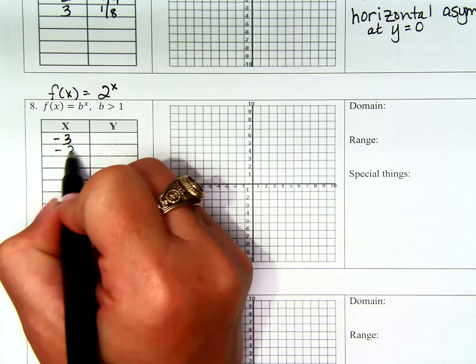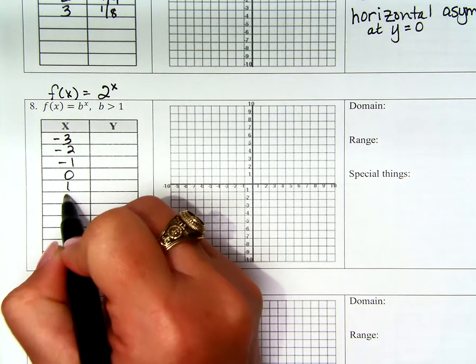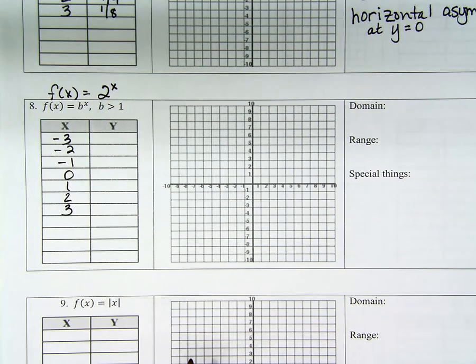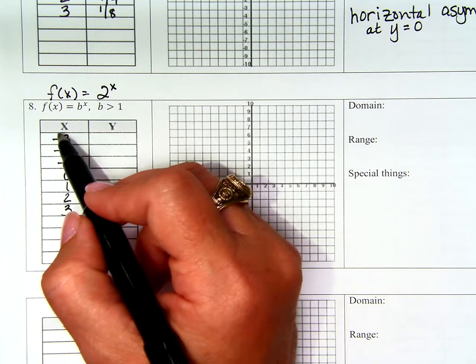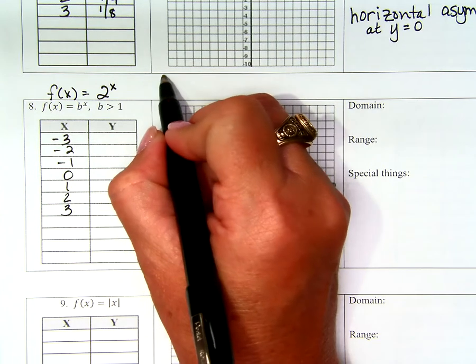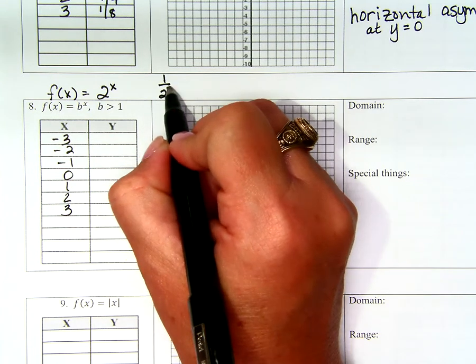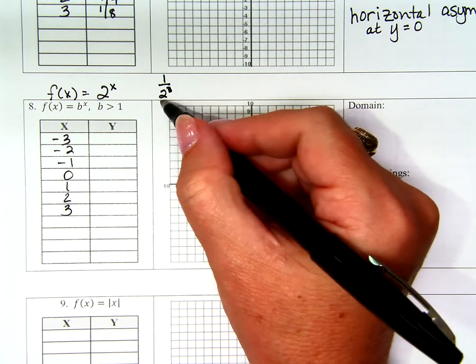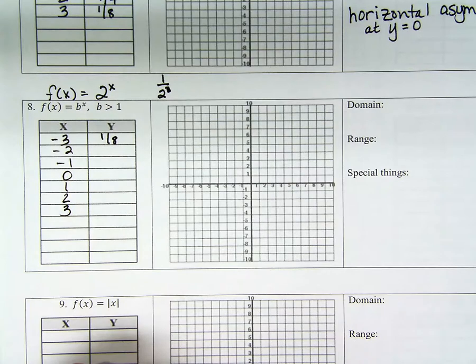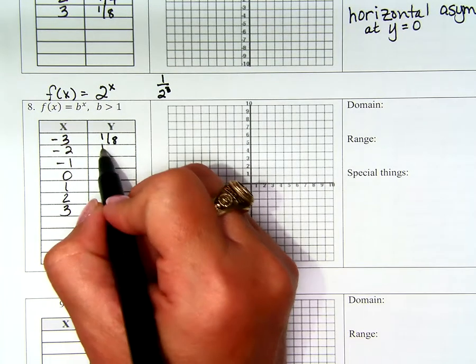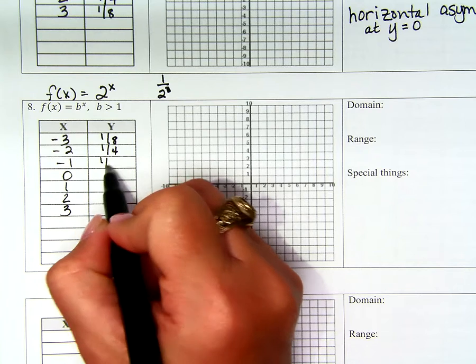Same ones? Negative 3, negative 2, negative 1, 0, 1, 2, 3. It is? Yes. Well that's convenient, but let's make sure we understand. 2 to the negative 3rd power, it wants to be 2 to the 3rd power, we move that to the denominator. 2 to the 3rd power is 8, so that's 1 8th. So, 1 4th and 1 half. Anything to the 0 power is 1. So, 2, 4 and 8.